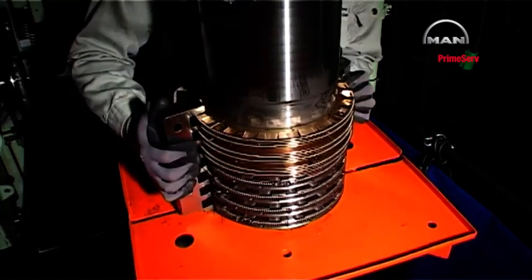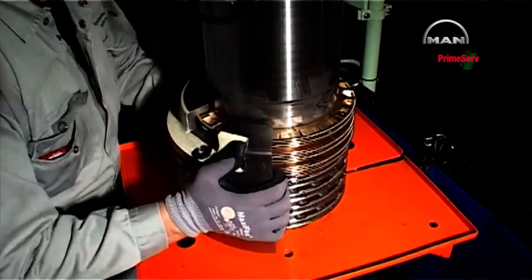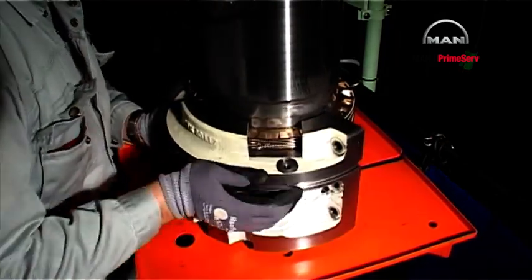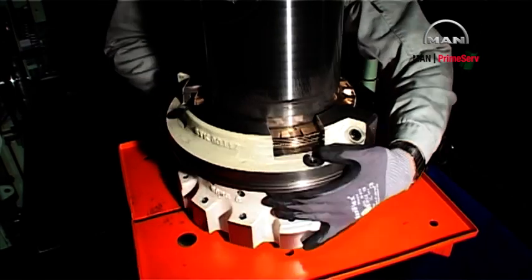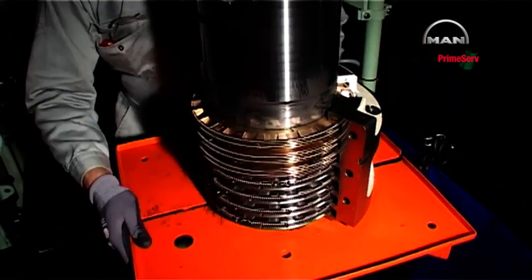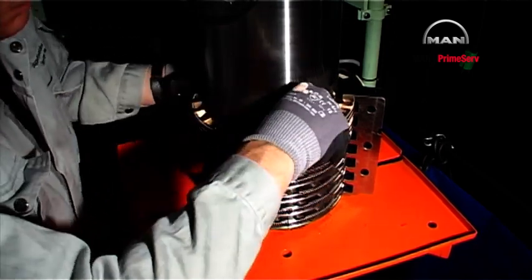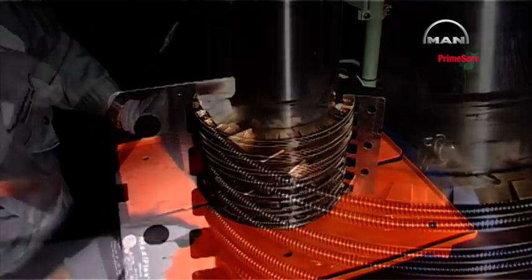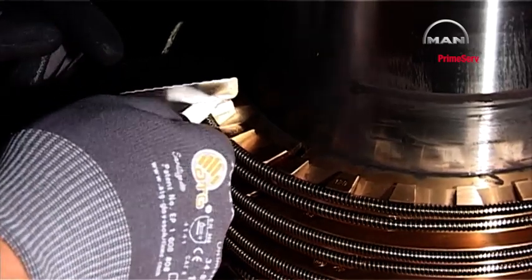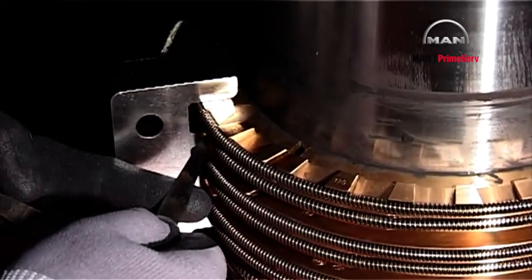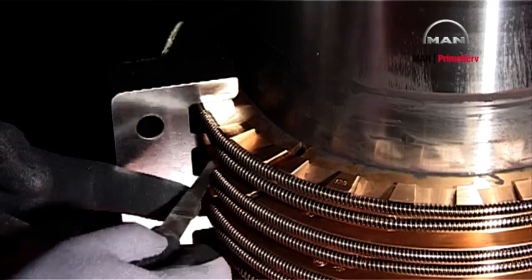Subsequently, push the half stuffing box into contact with the piston rod round the ring units. Check the ring clearance again.